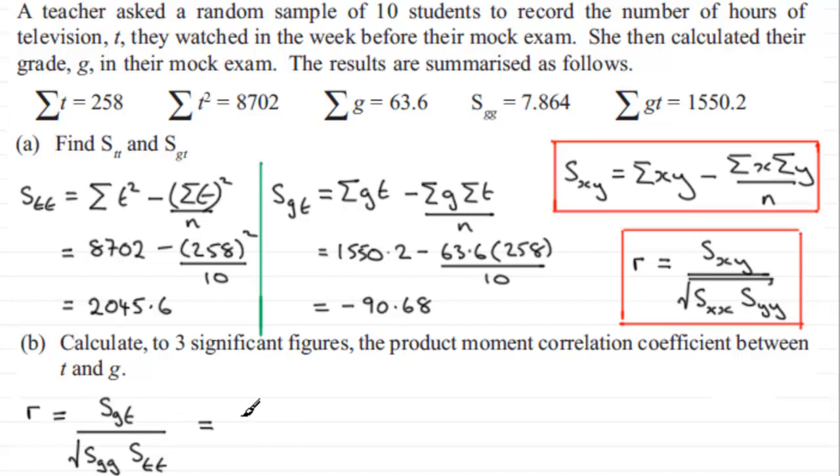And it's just a question now of putting our values in. So for sgt we worked it out here as minus 90.68, and we're dividing this then all by the square root of sgg which we're given up here was 7.864, and we multiply this with stt which we worked out over here as 2045.6.